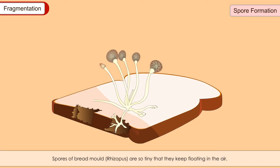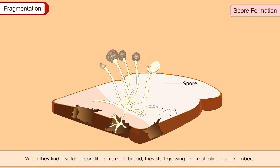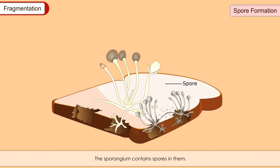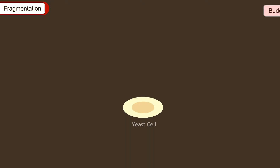Spores of bread mould, rhizopus, are so tiny that they keep floating in the air. When they find a suitable condition like moist bread, they start growing and multiply in huge numbers. The mould has fine thread-like outgrowths called hyphae, which have tiny round structures on the top called sporangium. The sporangium contains spores in them.